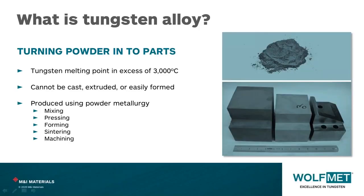The melting point of tungsten is 3422 degrees, meaning that by the time you've melted it there's actually nothing you can pour it into that can contain it. So you can't cast it, you can't extrude it, and it's not very easily formed or forged. So the only way we can make it is through powder metallurgy, which we use to form a metal matrix composite.